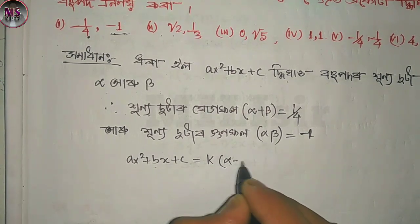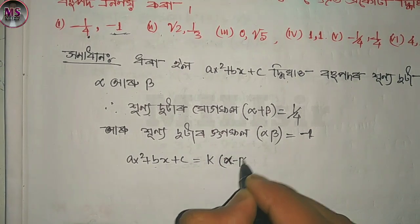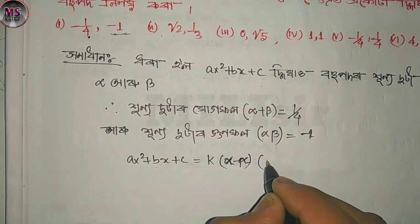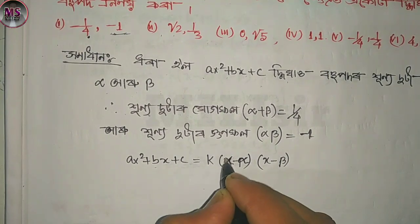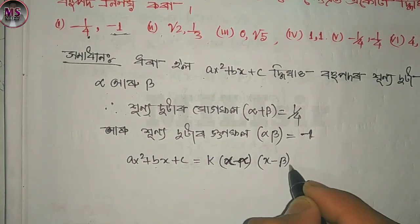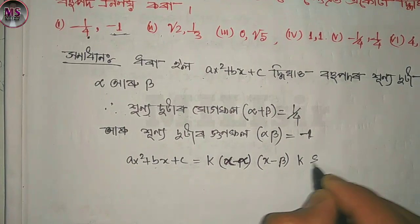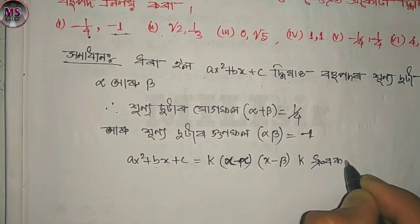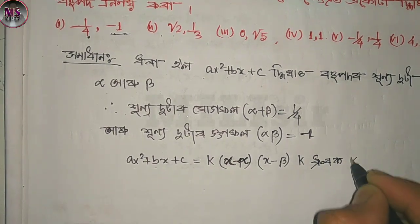Alpha minus... x minus alpha... and x minus alpha... and x minus beta. K is what is called the leading coefficient — K is called the Drupak Pot.